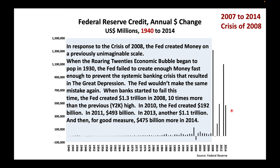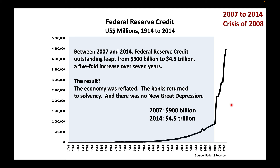And then for good measure, $475 billion more in 2014. Between 2007 and 2014, Federal Reserve Credit outstanding leapt from $900 billion to $4.5 trillion — a five-fold increase over seven years. The result? The economy was reflated, the banks returned to solvency, and there was no new Great Depression.